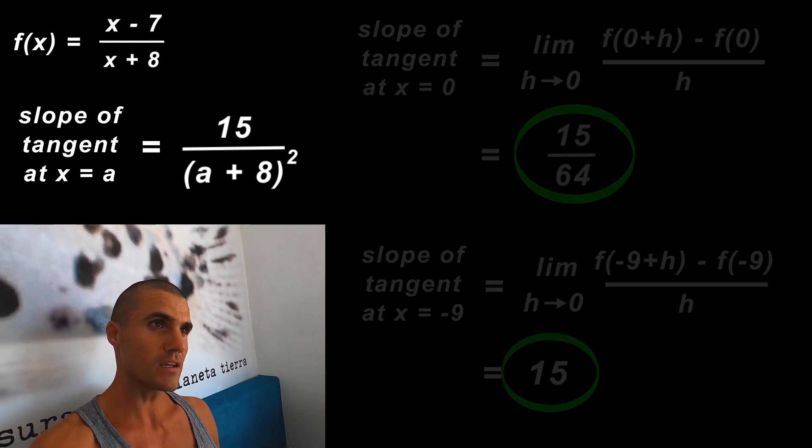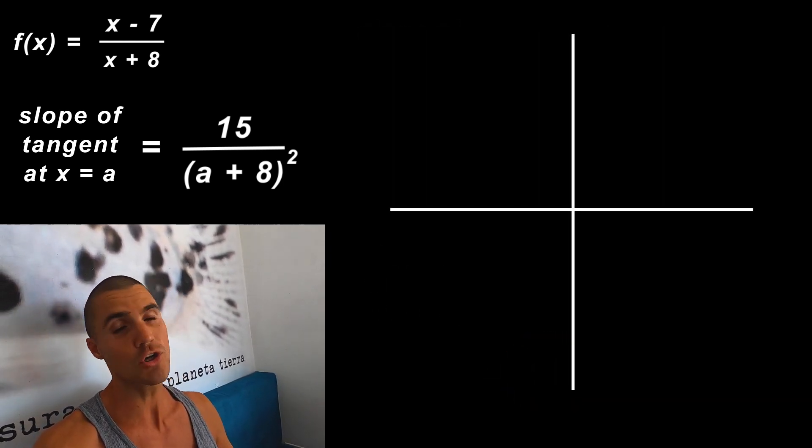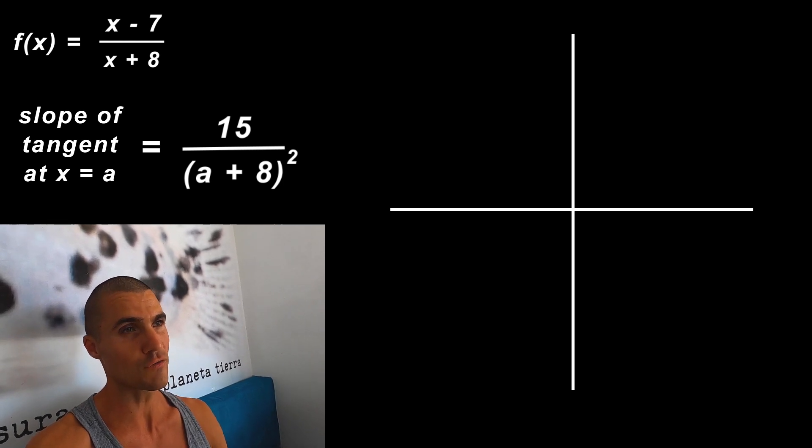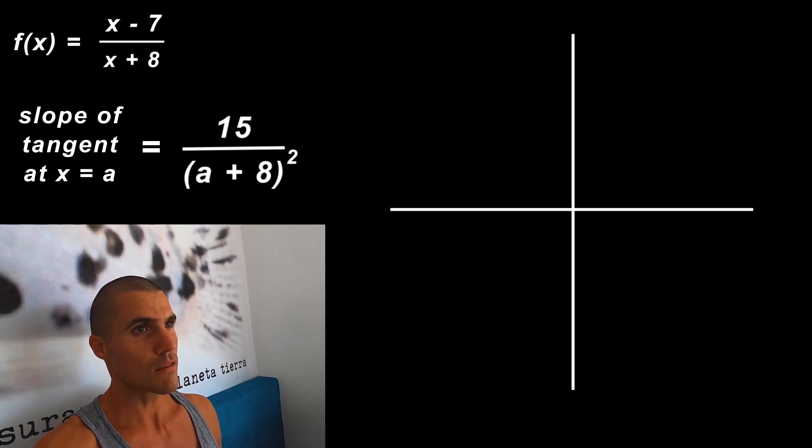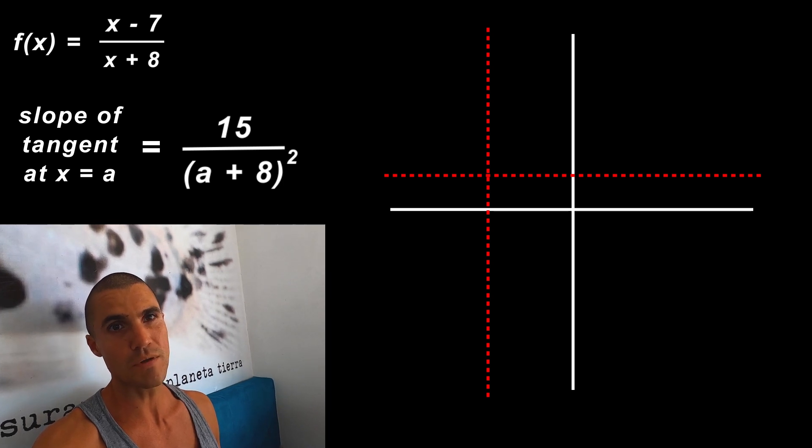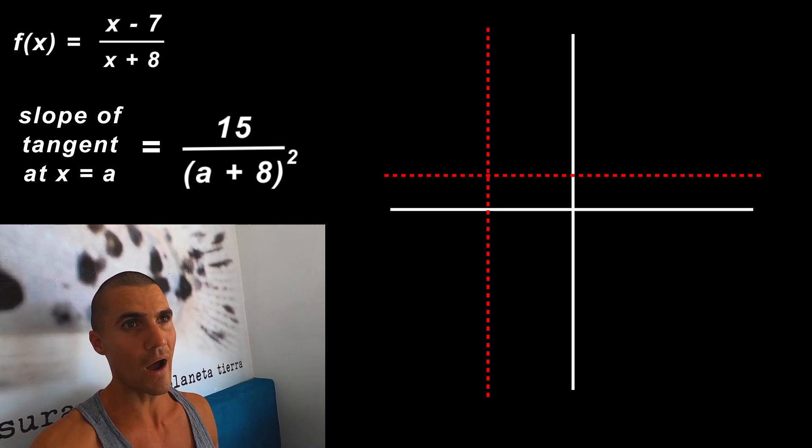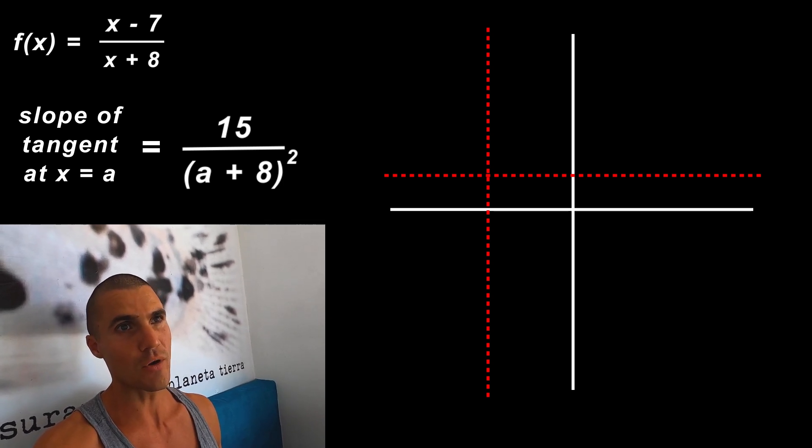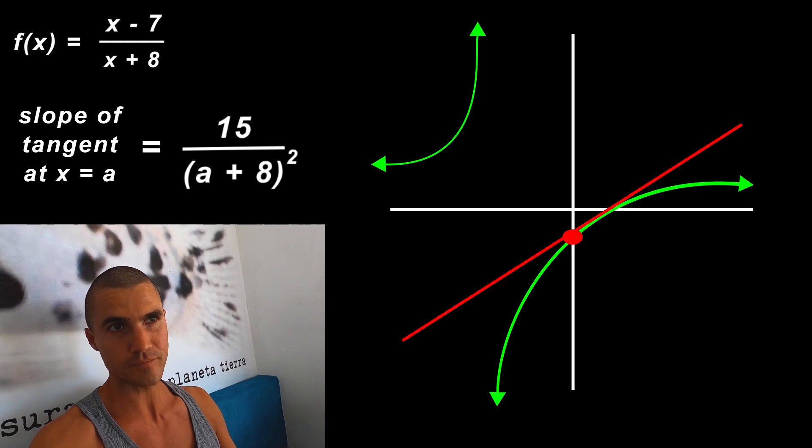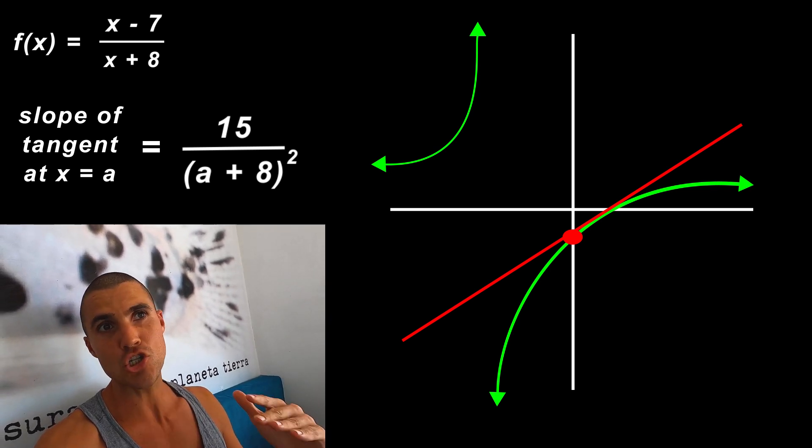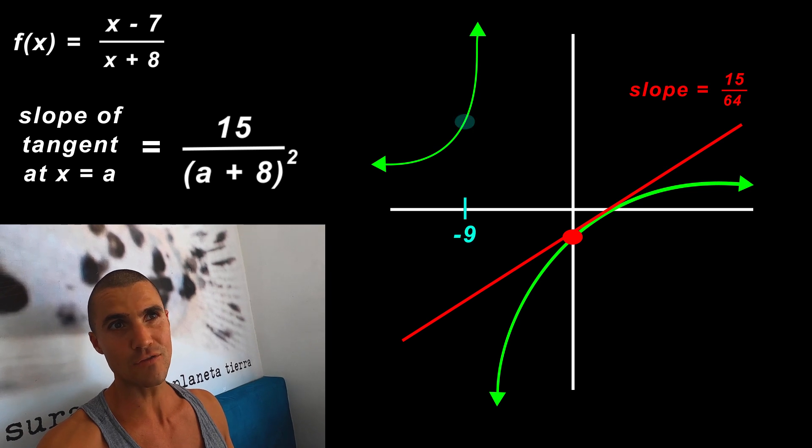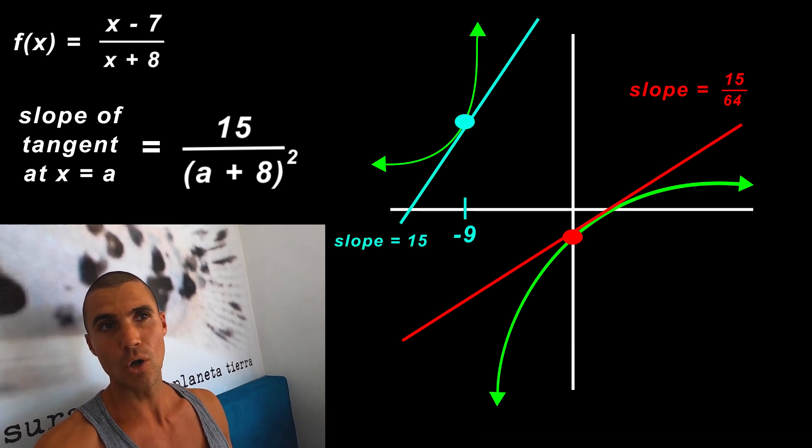You can also show this graphically. If we were to take this function, notice it's a linear over a linear function, so a little bit of review from advanced functions. The horizontal asymptote is going to be at 1, vertical asymptote is going to be at -8, the x-intercept is going to be at 7, and the y-intercept is going to be at -7/8. If we made that graph, basically at an x value of zero, if we drew a tangent there on the function at that point, the slope of that tangent line would be 15/64. If we also drew a tangent at the x value of negative nine, the slope of that tangent would be 15.